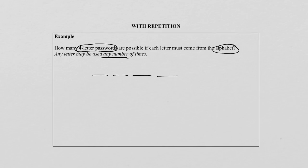Now, as you are aware, there are 26 letters in the alphabet. So that means this position, there are 26 possibilities.